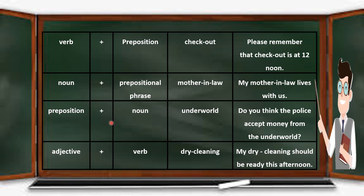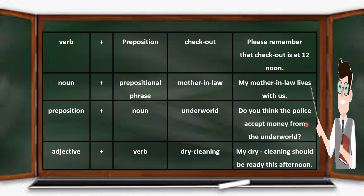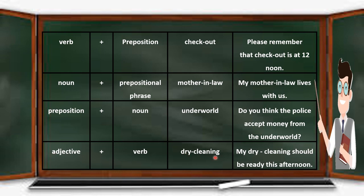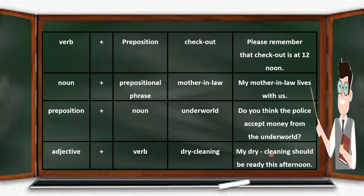The next combination is preposition plus noun: 'underworld' — where 'under' is the preposition and 'word' is the noun. Example: 'Do you think the police accept money from the underworld?' — 'underworld' functions as the complement. The next combination is adjective plus verb: 'dry cleaning' — 'dry' is the adjective and 'cleaning' is the verb. Example: 'My dry cleaning should be ready this afternoon' — 'dry cleaning' is the subject and written with a hyphen.